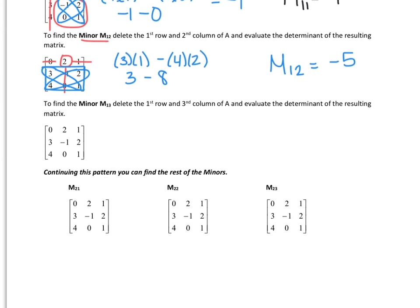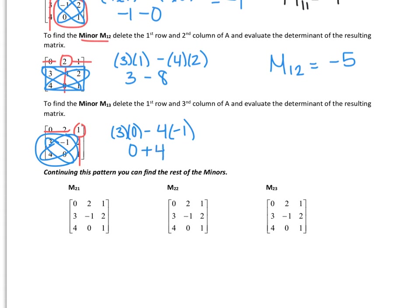To find minor M 1,3, we find the first row, third column, circle that term, wipe everything else out in that row and column, and find the determinant of the leftover matrix. So 3 times 0 minus 4 times negative 1 — that's 0 plus 4, which is 4. So minor M 1,3 is equal to 4.